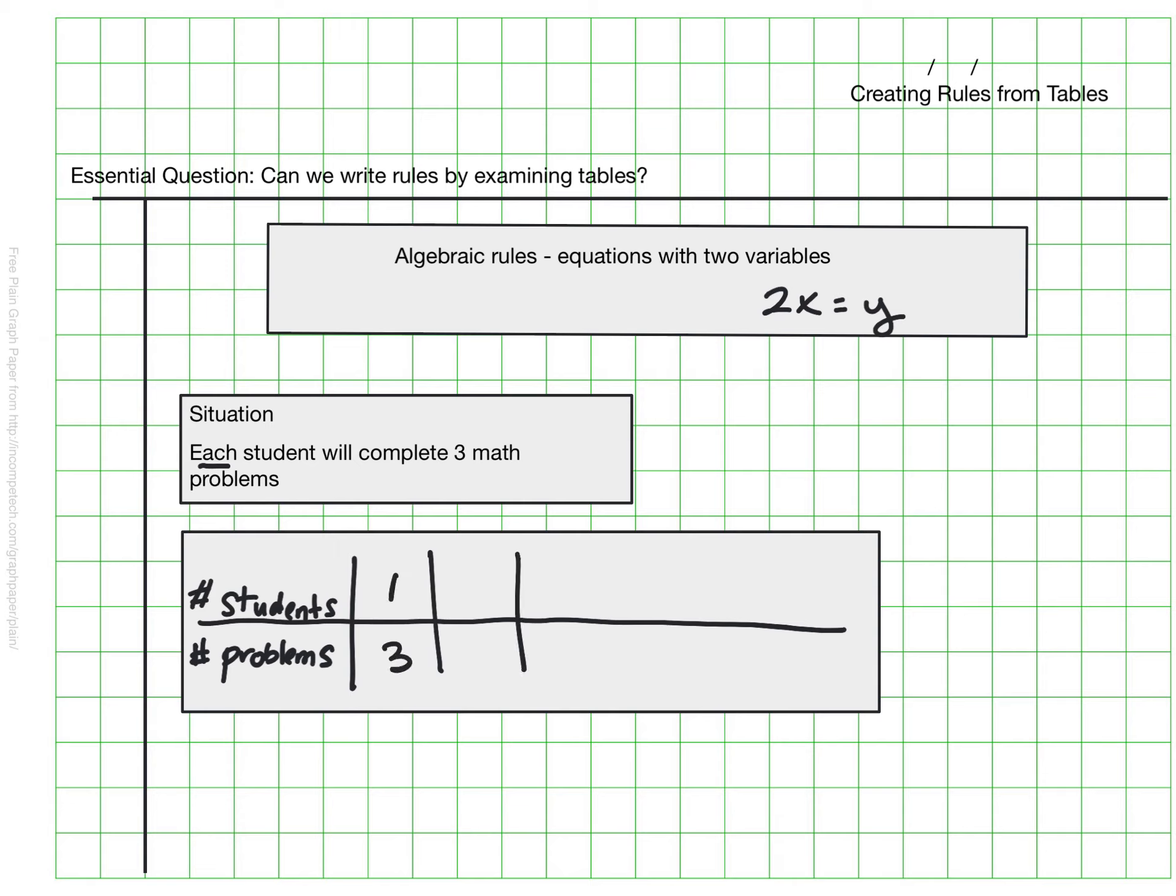I would know if I had two students, they would each do three. That would be a total of six. If there were five students and each of those students did three problems, 3, 6, 9, 12, 15. I know that would be 15.